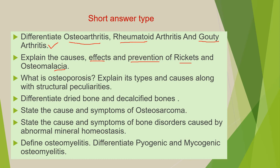Next is: state the cause and symptoms of osteosarcoma. Next is: state the cause and symptoms of bone disorders caused by abnormal mineral homeostasis. And the last question from this category is: define osteomyelitis and differentiate pyogenic and mycogenic osteomyelitis.